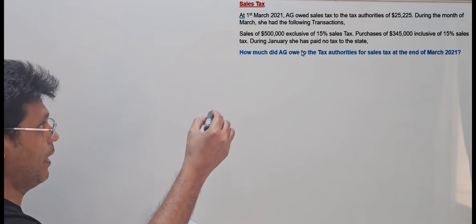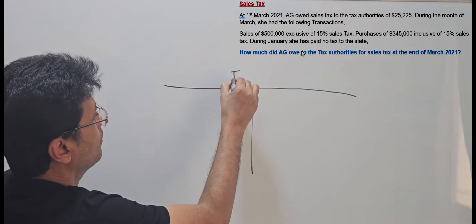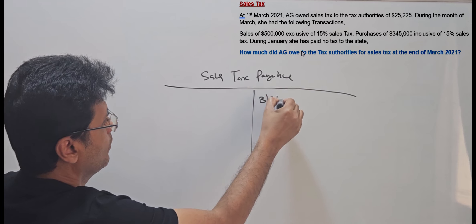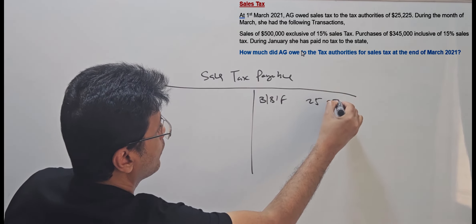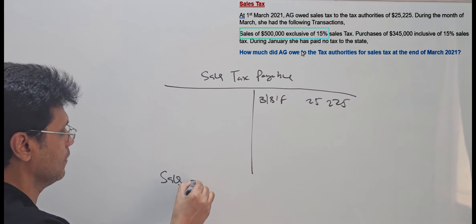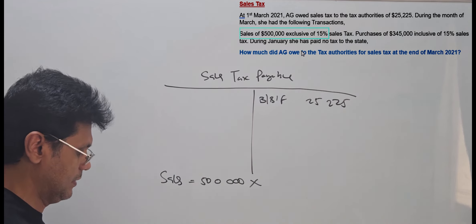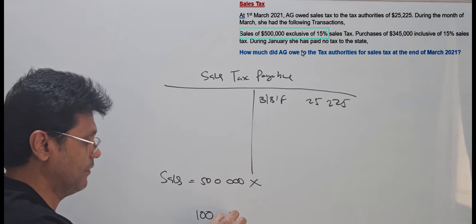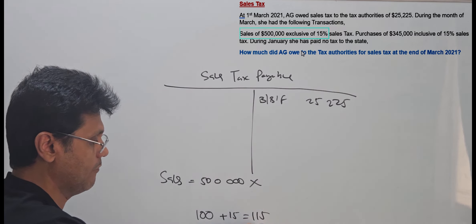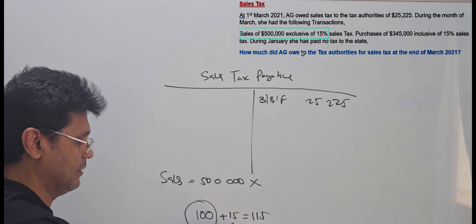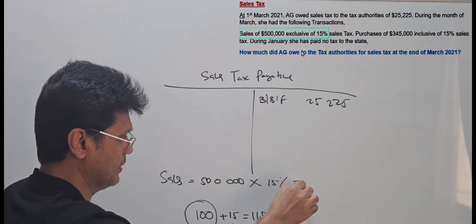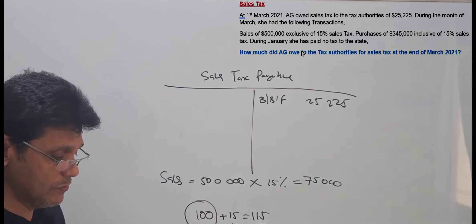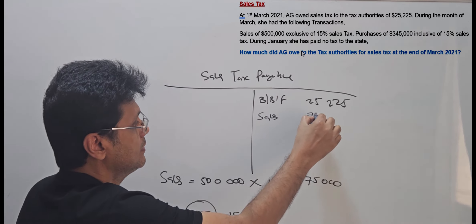We will set up a sales tax payable account. The balance brought forward is $25,225. For sales of $500,000, which is exclusive of sales tax, we can directly calculate 15% on $500,000. That gives $75,000, which must be paid to the tax authorities — it is a liability. So we record sales tax on sales as $75,000.